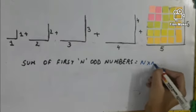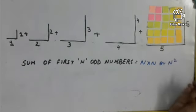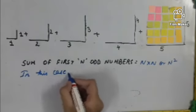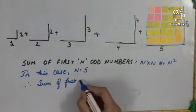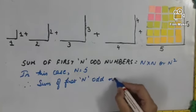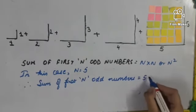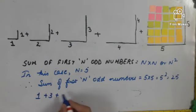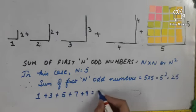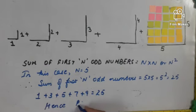The sum of first n odd numbers is equal to n into n, or n square. In this case, n is equal to five. Therefore, the sum of first n odd numbers is equal to five into five, which is equal to five square, which is equal to twenty-five. We can also say that one plus three plus five plus seven plus nine is equal to twenty-five.